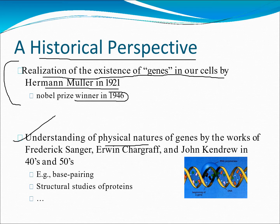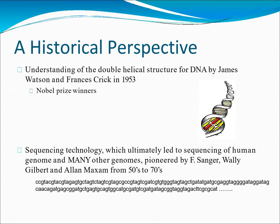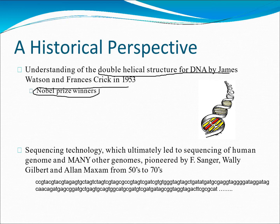Secondly, the understanding of the physical nature of the gene by the works of Frederick Sanger, Erwin Chargaff, and John Kendrew in the 40s and 50s. Some examples include sequencing and structural studies of proteins. Also, the understanding of the double helical structure of DNA by James Watson and Francis Crick, for which they won a Nobel Prize — a massive contribution to everything we study today.